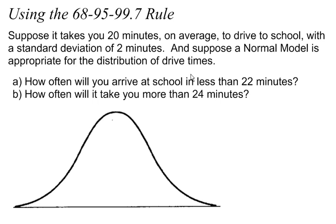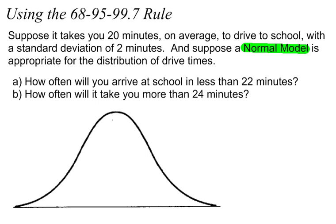The next part says: suppose that a normal model is appropriate for the distribution of drive times. It's important that we see this normal model. If our data is not normal — if the distribution of our data is not normal — then we don't want to use the 68-95-99.7 rule. This is only true for normal models.